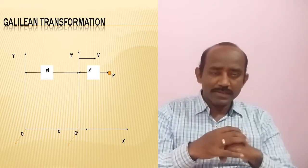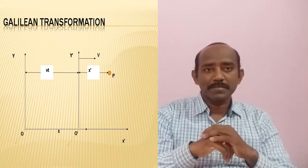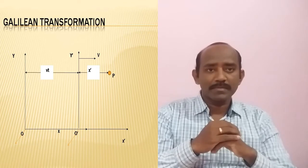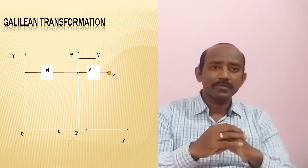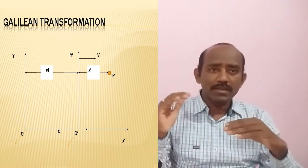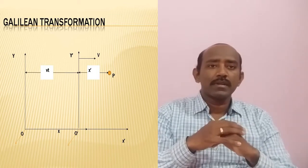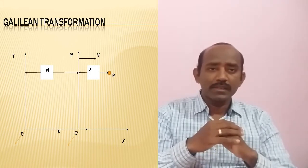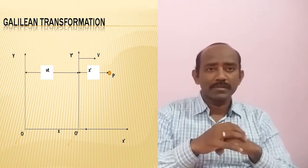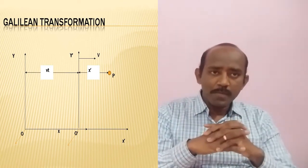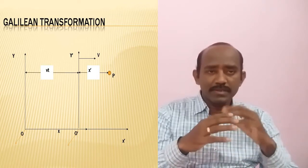In the space-time coordinate system, we have four coordinates: x-axis, y-axis, z-axis, and time. Now let us consider an observer O on the platform and another observer O' inside the train. We are denoting the frame of reference as S frame at rest and S' as the moving frame. Consider observer O in the rest frame S, and another observer O' in the moving frame S'.